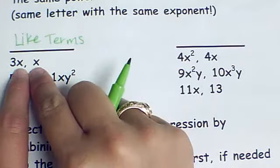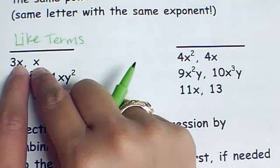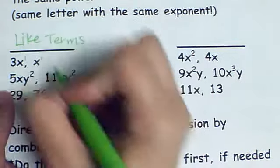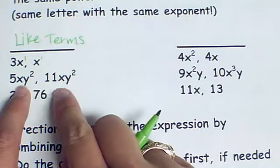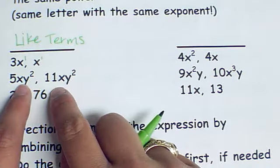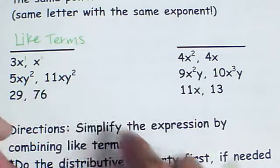I have two categories here. The first category is terms that are like terms. Notice that these both have x's. They don't have the same number in front but they both have x and they both have an exponent of 1. In this one they have xy². The x is by itself and the y is squared. So those are like terms.